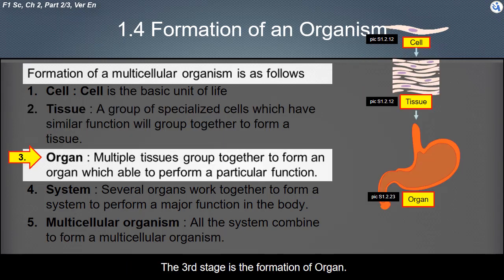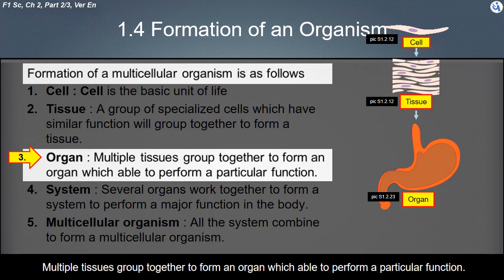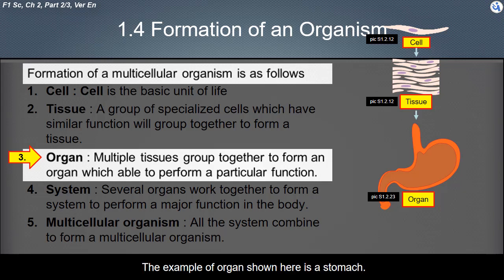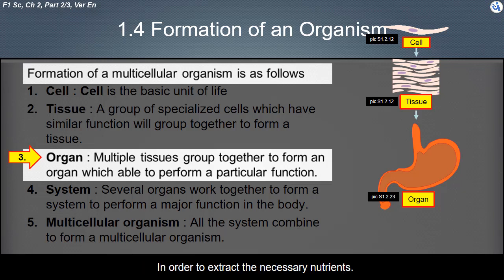The third stage is the formation of an organ. Multiple tissues group together to form an organ, which is able to perform a particular function. The example of an organ shown here is a stomach. The function of the stomach is to digest the food in order to extract the necessary nutrients.